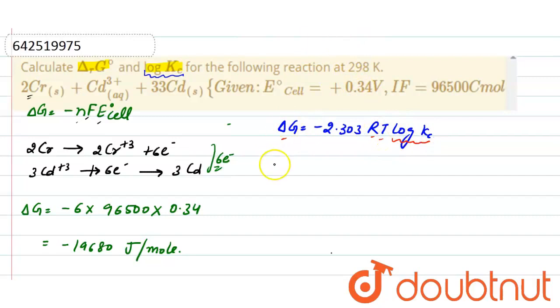Put the values here: minus 19680 equals minus 2.303 times R, which is 8.314, times temperature 298, times log Kc. After solving, the value of log Kc is 34.5014. This is the value of log Kc.